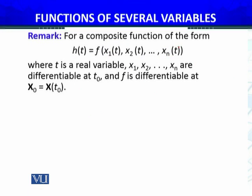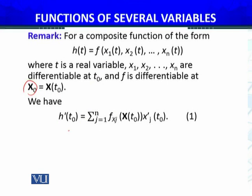Now for a composite function of this form where t is a real variable, x1, x2, and xn are functions differentiable at t equals t0, and f is differentiable at x0 equals x of t0. We have the first derivative of that real valued function equals summation of the partial derivative of f, which is a function of several variables, evaluated at x0, which is x of t0, and each component has its first derivative. This is just the chain rule for this special type of function.